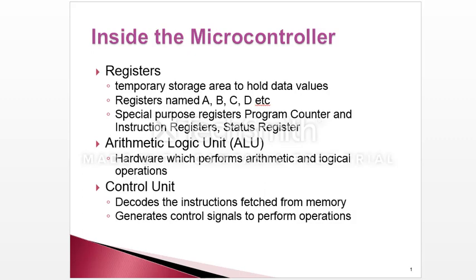The first one is registers, the second one is ALU, and the third one is control unit. In registers we store temporary data. Registers can be named like A, B, C, D — anything you want. There are three important special registers: program counter, instruction register, and status register.